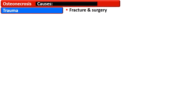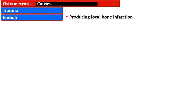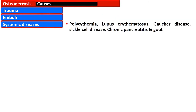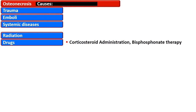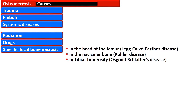There is a long list of causes of osteonecrosis. Trauma as a result of fracture or following surgery is common. Emboli produce focal bone infarction, hence leading to osteonecrosis. Osteonecrosis is associated with systemic diseases such as polycythemia, lupus erythematosus, Gaucher disease, sickle cell disease, chronic pancreatitis, and gout. Internal or external radiation is also associated with this, as are bisphosphonate therapy and corticosteroid administration.